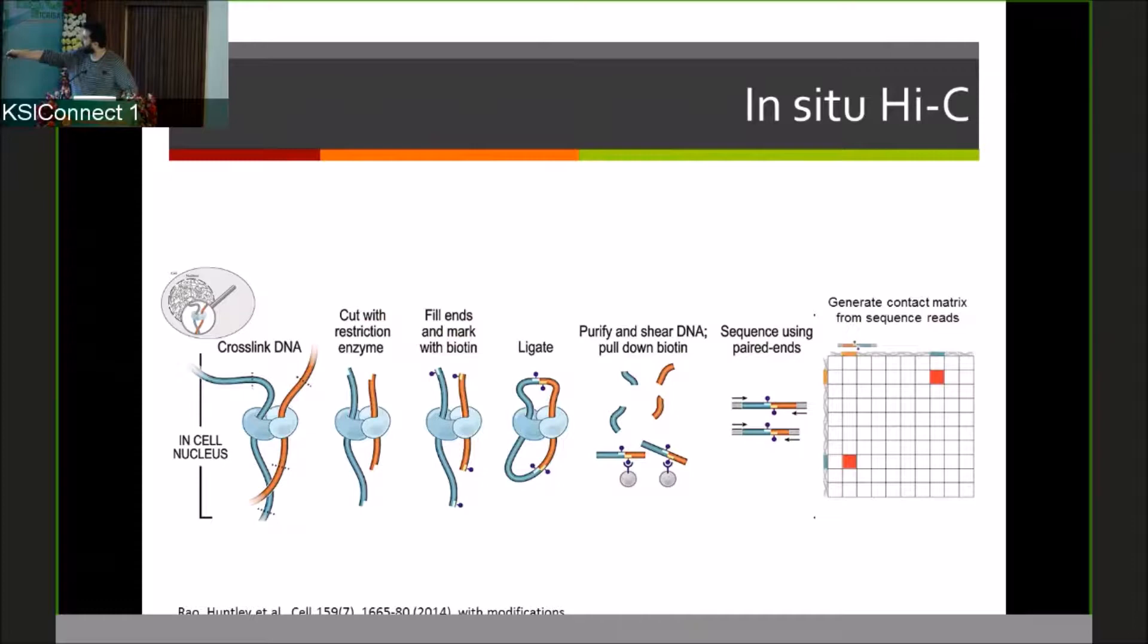We start by taking our DNA and cross-linking it, freezing everything in place. We cut the DNAs into little bits, and we use T4 DNA ligase to paste bits that are adjacent in 3D to one another. I want you to pay attention to what happened here. We started with two bits of the genome that are close by in 3D but actually on different molecules. We cut the genome into little bits, then paste bits that are adjacent in 3D to one another.